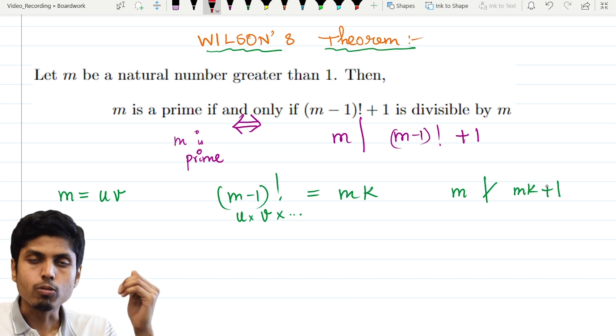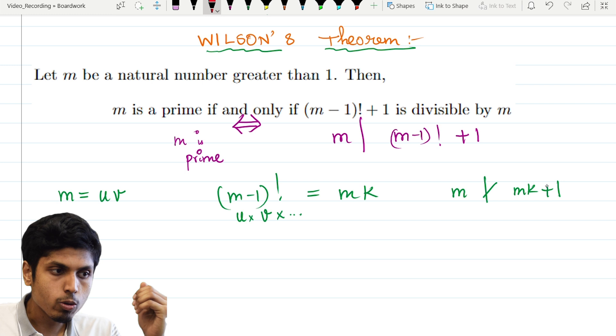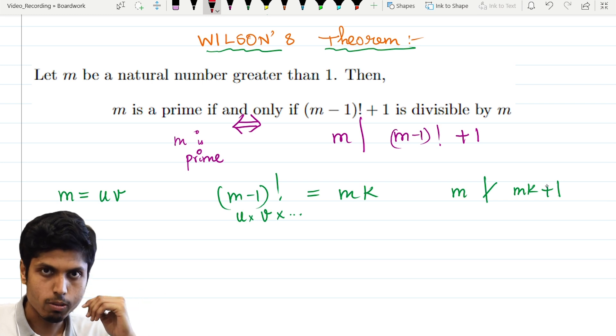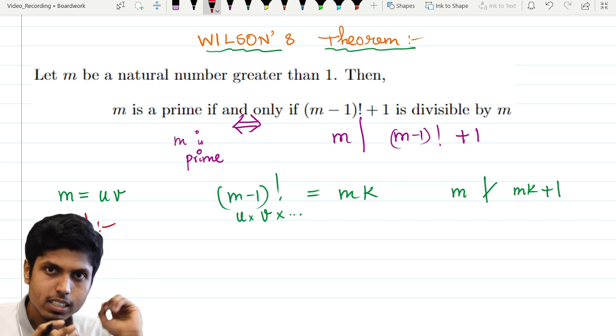But coming to the other way of the proof, the forward way, if m is a prime, how will I prove that m divides m minus 1 factorial plus 1? So it is an interesting proof. And that's why I will give you a short sketch of the proof. Then we will come back and easily solve this problem.